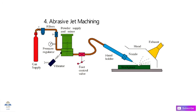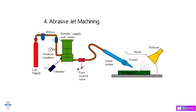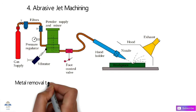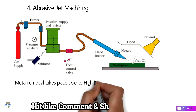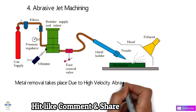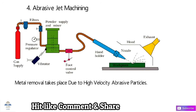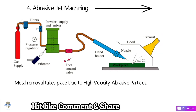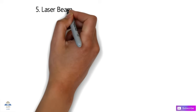The next process is Abrasive Jet Machining. In this process, metal removal takes place due to high-velocity abrasive particles striking the workpiece.